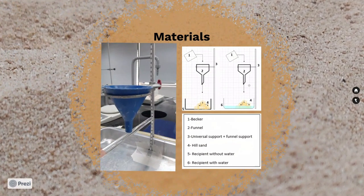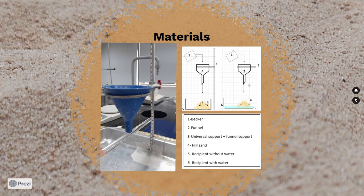The group used the following materials to run their experiments: fine and medium sand, a universal support with a funnel support, beaker, a funnel, a recipient 26.5 cm by 30 cm, a balance, water, and a measuring tape.